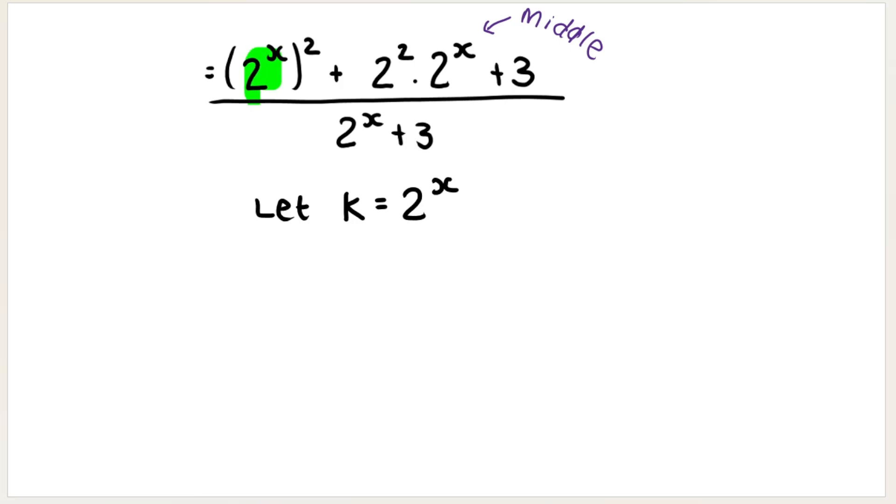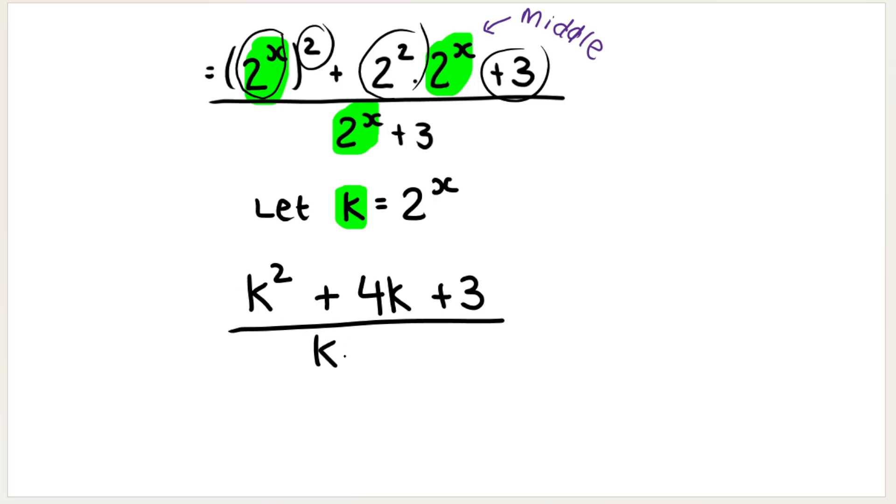So instead of 2 to the power of X, we are going to put K. So this is 2 to the power of X squared, so it's going to be K squared. Plus, here we have 2 to the power of 2. Okay, now what's another way to write 2 to the power of 2? 4. And then once again, instead of 2 to the power of X, we are going to write K. Because everywhere where you see 2 to the power of X, we are going to replace it with K. And then plus 3 goes here. Then at the bottom of the fraction, again, everywhere where you see 2 to the power of X, you write K in its place. And then say plus 3.